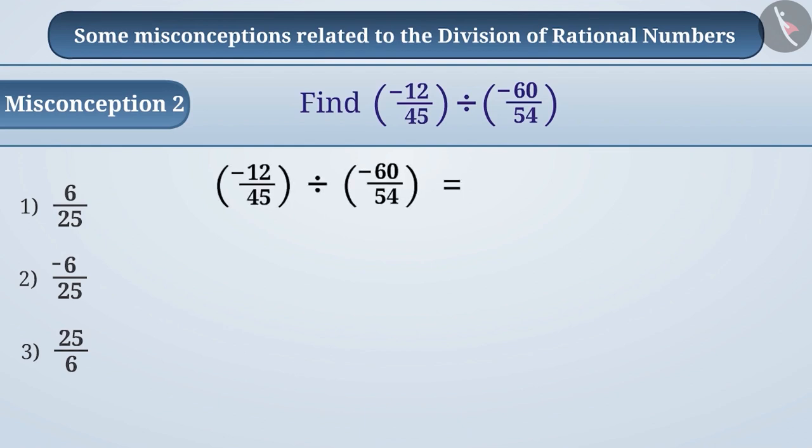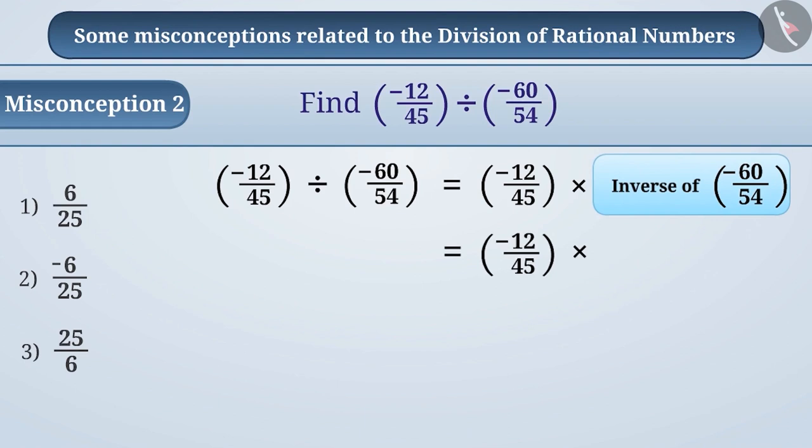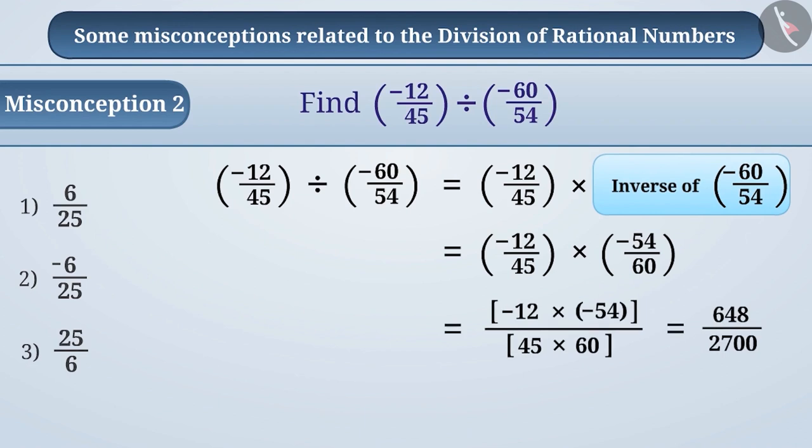To solve this, we will keep -12/45 exactly the same and multiply it by the inverse of -60/54. Here, the inverse of -60/54 is -54/60. Now, we can do this multiplication as follows. If we express this in standard form, we get the result 6/25, so the correct answer is option 1.